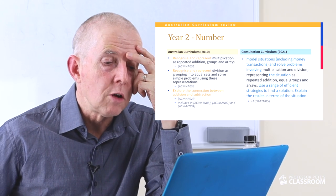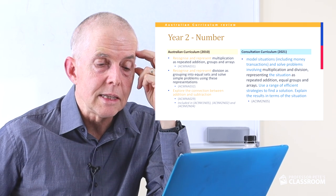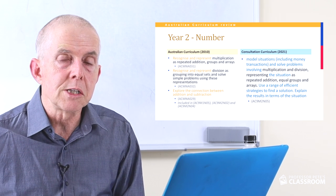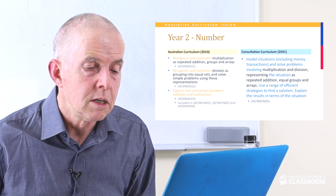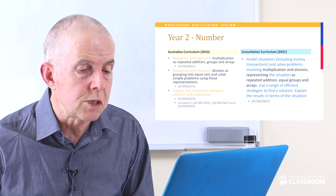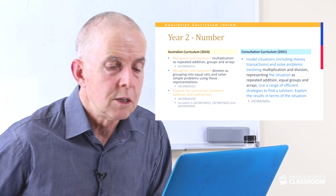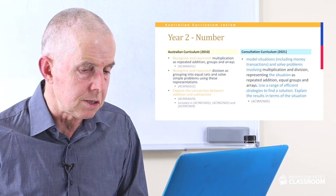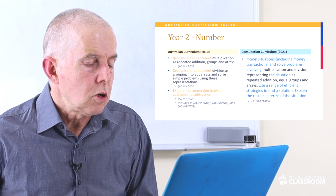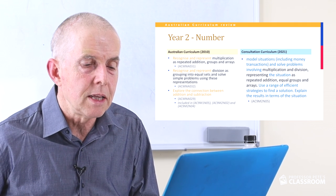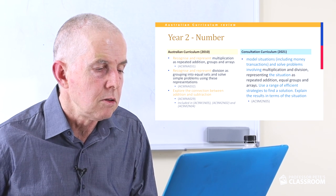Number content descriptor five has a lot of new blue text and is really a parallel to the previous statement, this time using multiplication and division. It covers representing situations as repeated addition, equal groups and arrays, using a range of efficient strategies — a very clear parallel with the addition and subtraction descriptor. The old phrases recognise and represent have been removed but are implied in what remains.